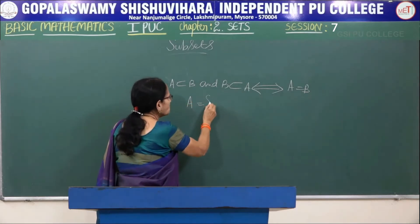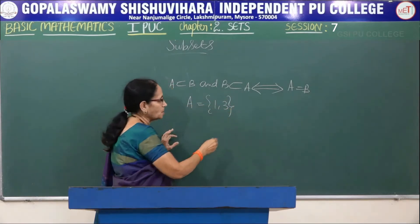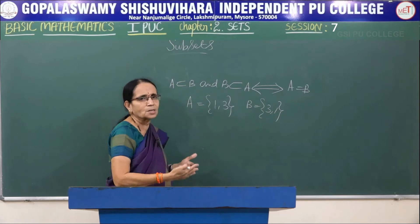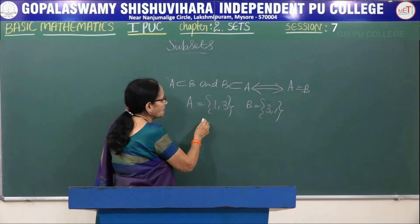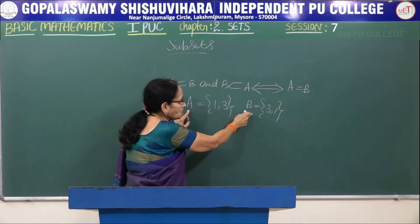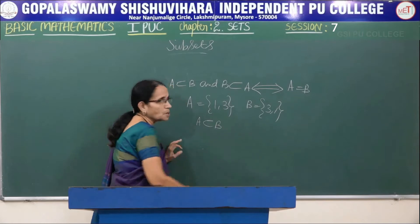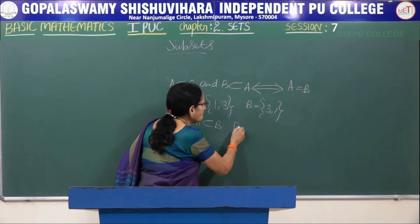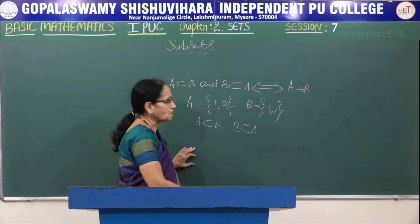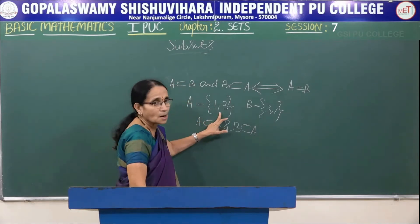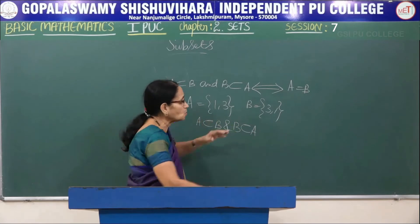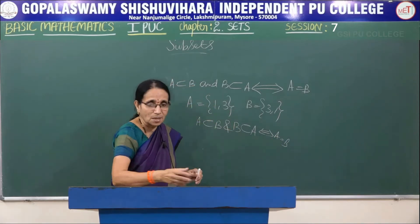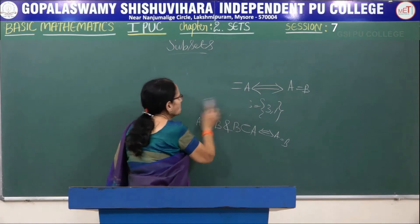For example, take A = {1, 3} and B = {3, 1}. We observe that each element of A is in B, so A is a subset of B. Conversely, each element of B is in A, so B is also a subset of A. Together, both sets have the same two elements, so A equals B. By taking an example, the idea always becomes clearer.